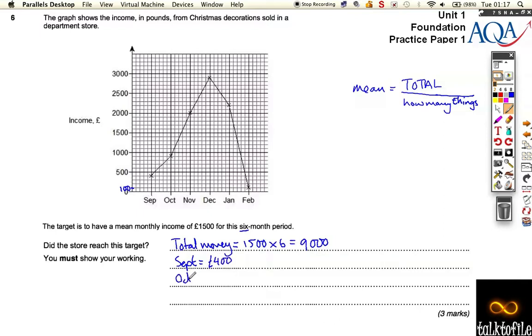In October, they took £900. In November, they took £2,000, all the way up here. In December, they took £2,900.